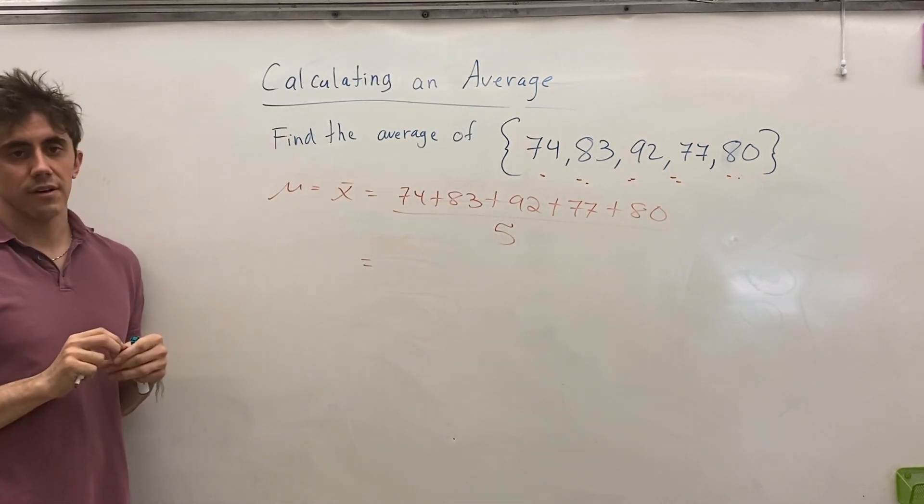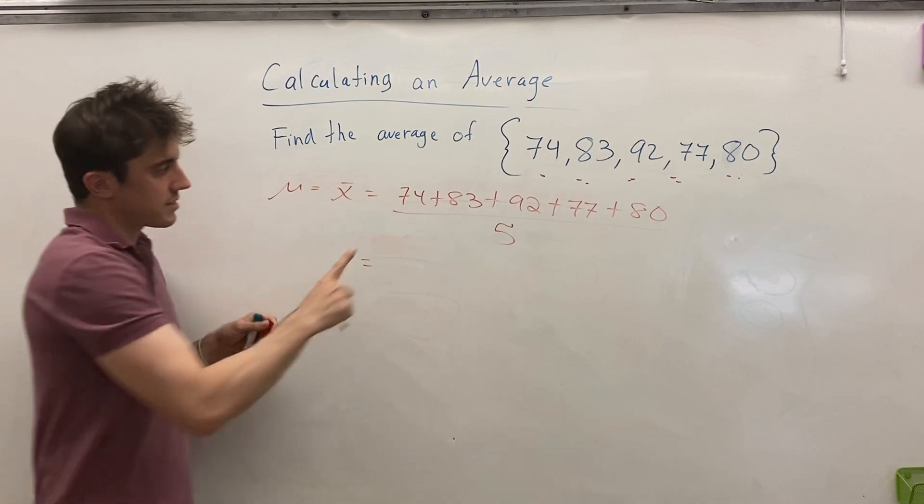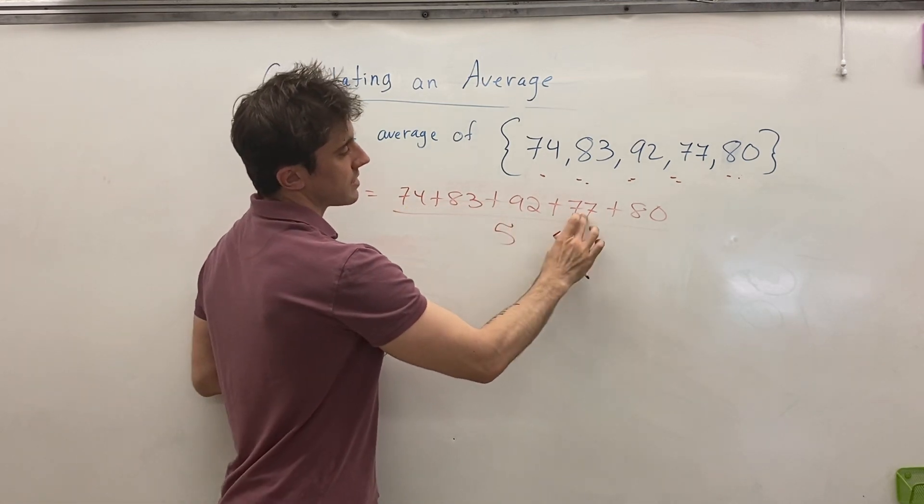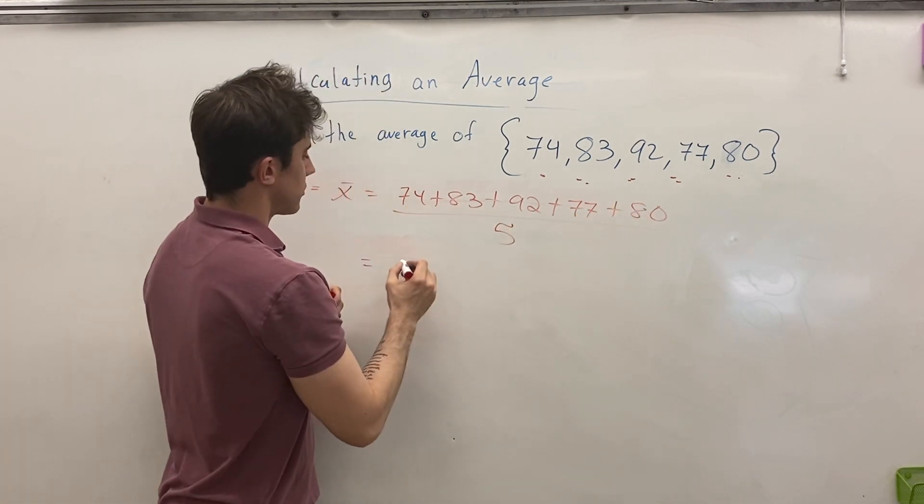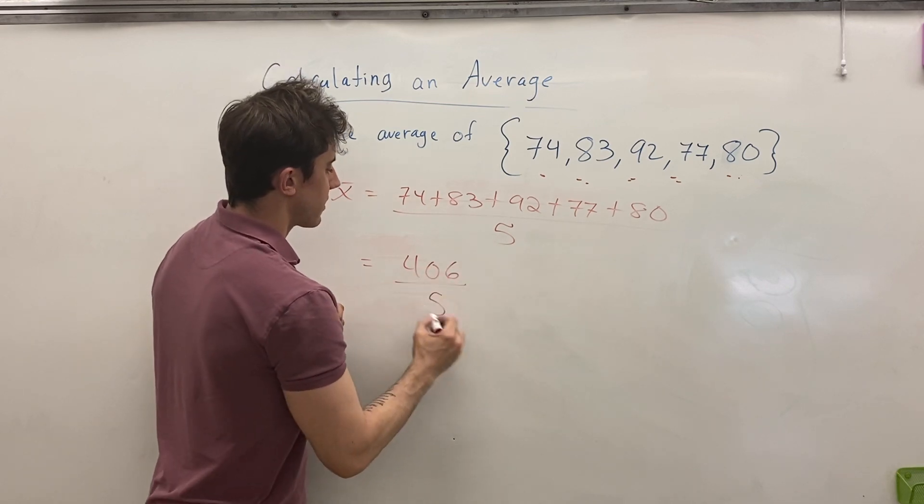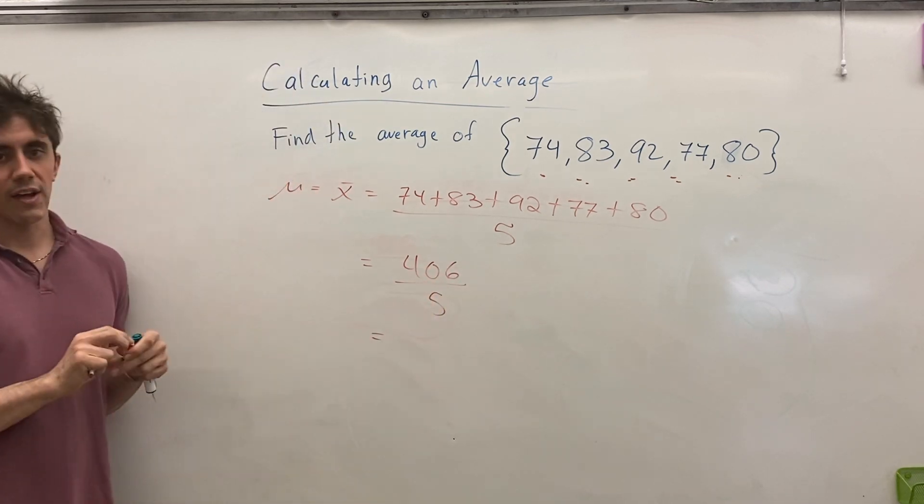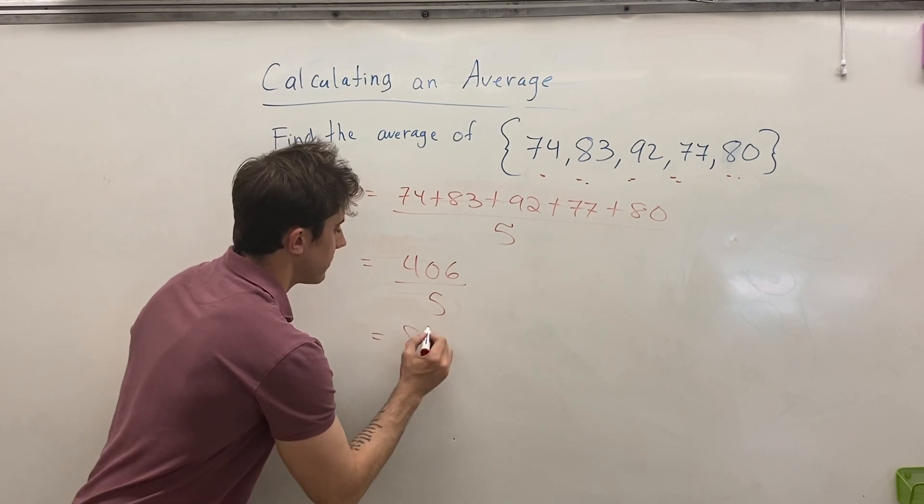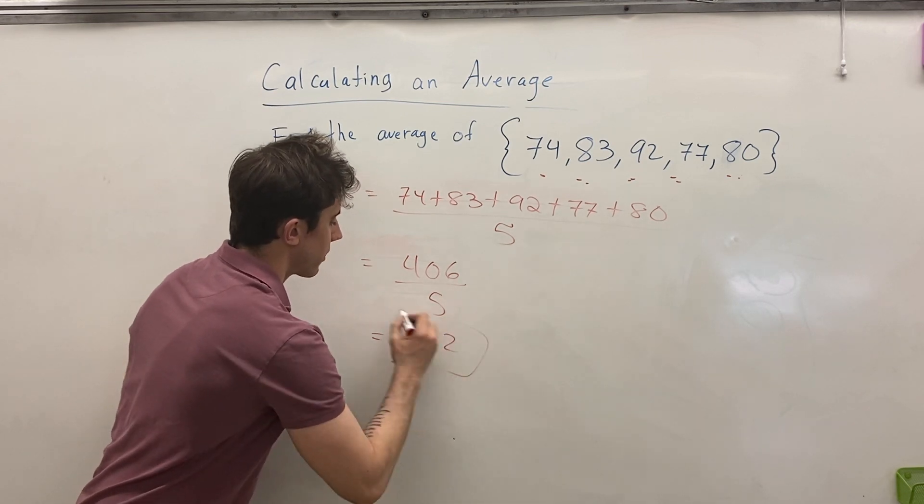If we take the sum of all five data points, 74 plus 83 plus 92 plus 77 plus 80, we get a total of 406, still dividing by five, and if we evaluate that number, we get 81.2 for our average.